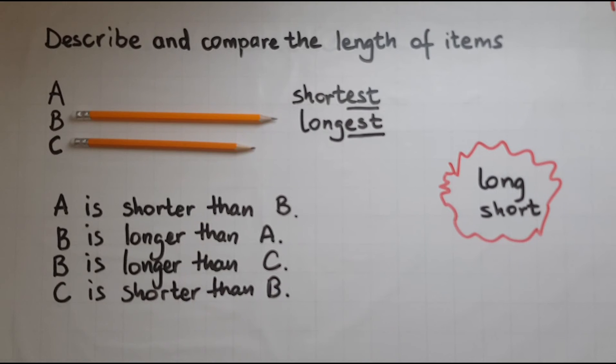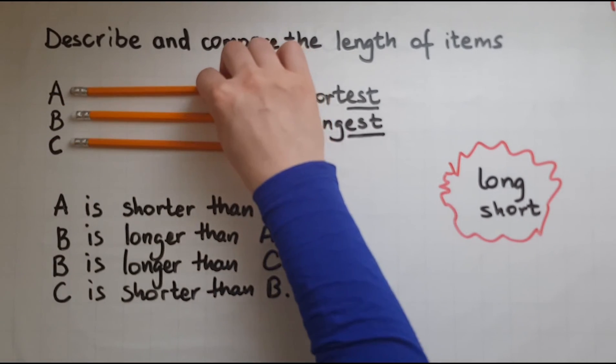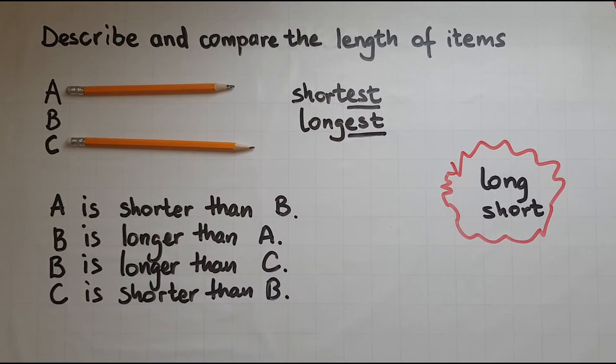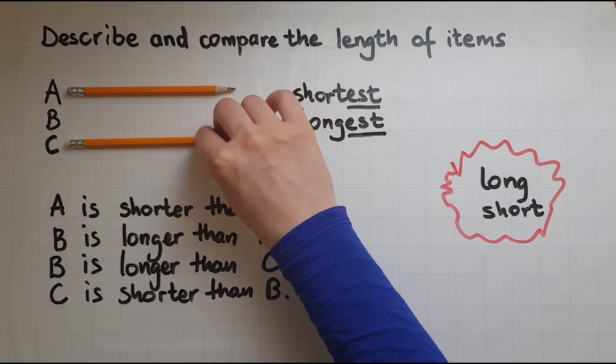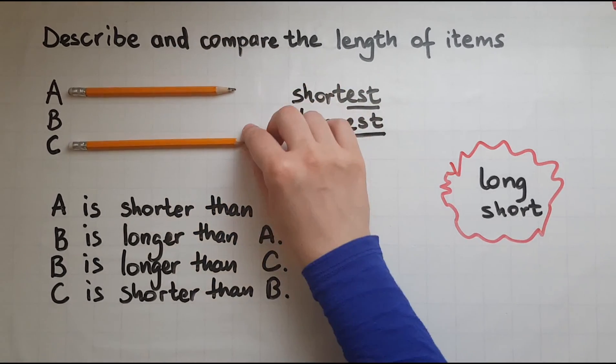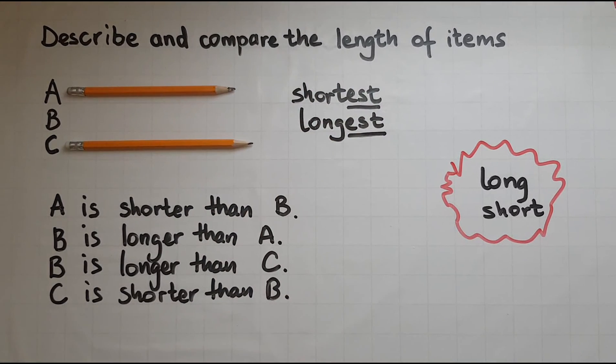And if I am to compare A with C then we'd have A is actually shorter than C. So I can write A is shorter than C.